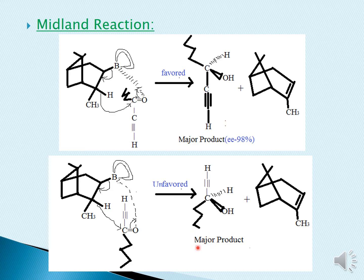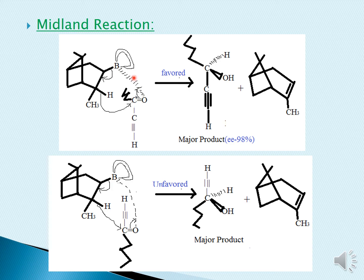The unfavored case gives the minor product. In this, one bond shifts, then another shifts, the moiety gets cleaved, and again a bond shifts, resulting in two products. Comparing both products, the re-face product is the major product. In general, for alpine borane treated with ketone groups: if re-face is present, the stable configuration gives the major product; if si-face is present, you get the minor product.